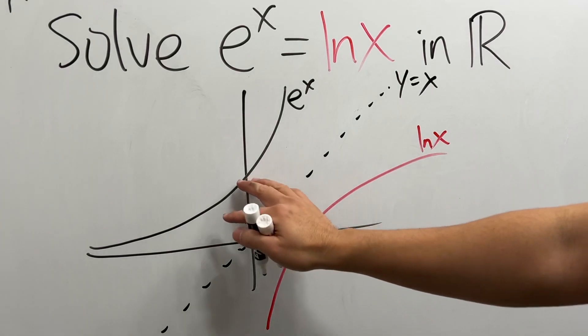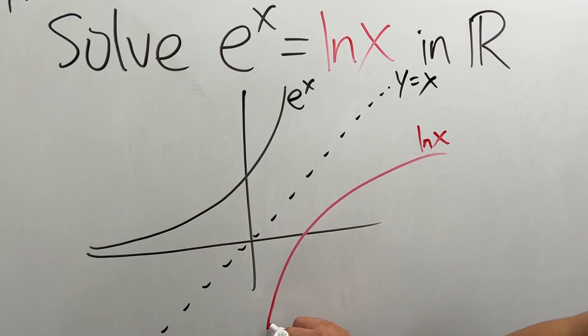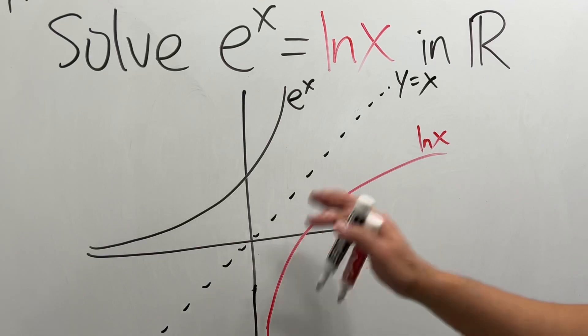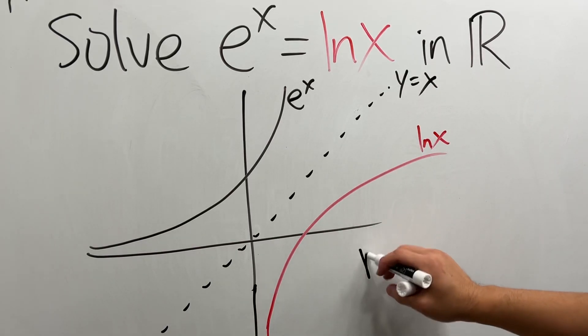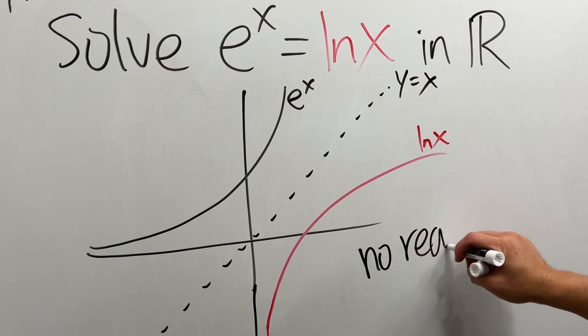But as you can see, they do not intercept. Therefore, we do not have any solutions in the reals. No real solution.